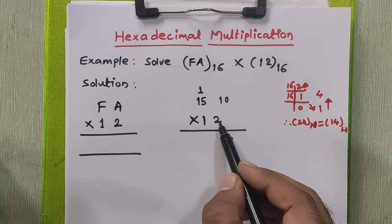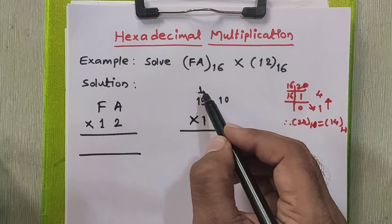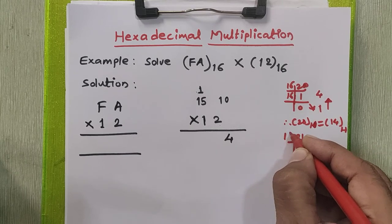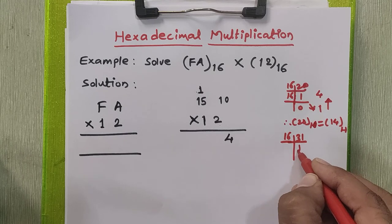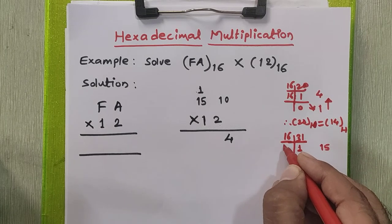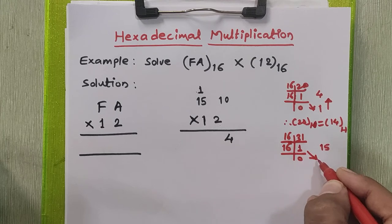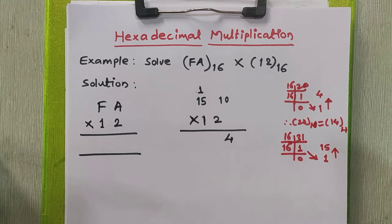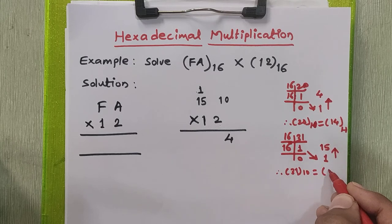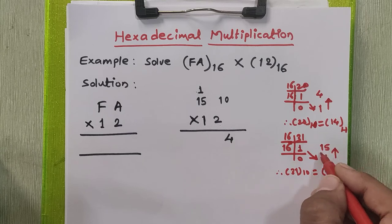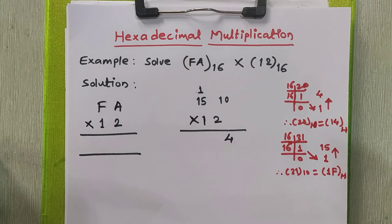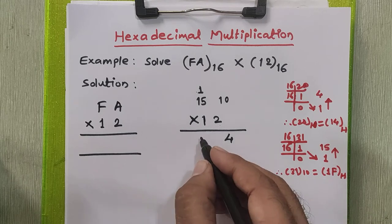Now we'll multiply this 2 with 15. 15 into 2 is 30. 30 plus 1, this carry, is 31. 31, it is in decimal. We have to convert it into hexadecimal. When you do that you will get quotient as 1 and remainder is 15. Again you divide this 1 by 16, you'll get quotient as 0, this remainder as 1 as it is. So when you arrange it from bottom to top you will get 31 in decimal is equal to 1F. 15 is equivalent to F. So I'll write 1F as the answer in hexadecimal. So this is the last digit in this multiplication. I'll put this 1F as it is here in the answer.